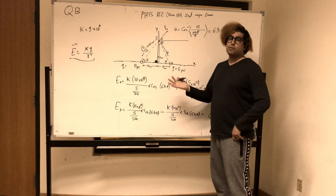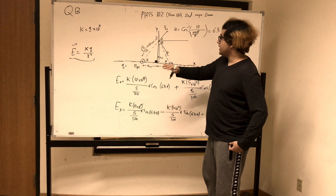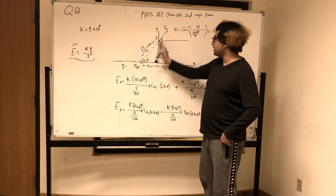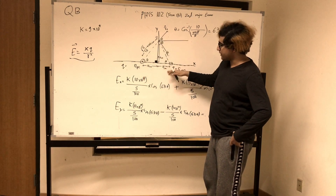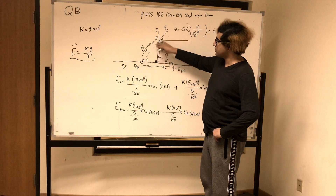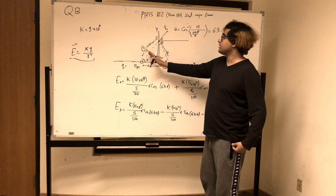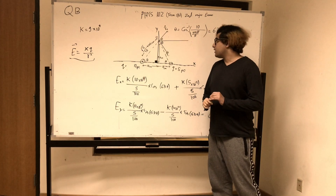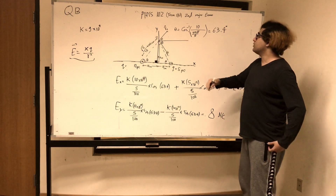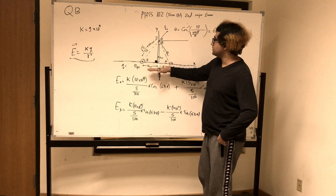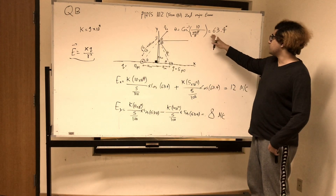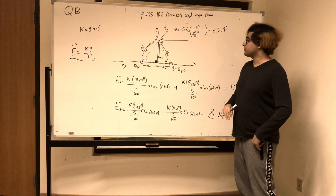First thing you want to do with this problem is get your measurements. We know that the separation between the positive charge and the middle line is basically 5 centimeters, and it's the same thing on the other side. So by the Pythagorean theorem, the hypotenuse is basically square root of 5 over 10, times 100 centimeters. Once you do that, you can figure out the angle theta. Theta is basically the inverse cosine of the adjacent, which is 10 centimeters, over the hypotenuse. If you plug this into your calculator, you'll find that theta is basically 63.4 degrees.